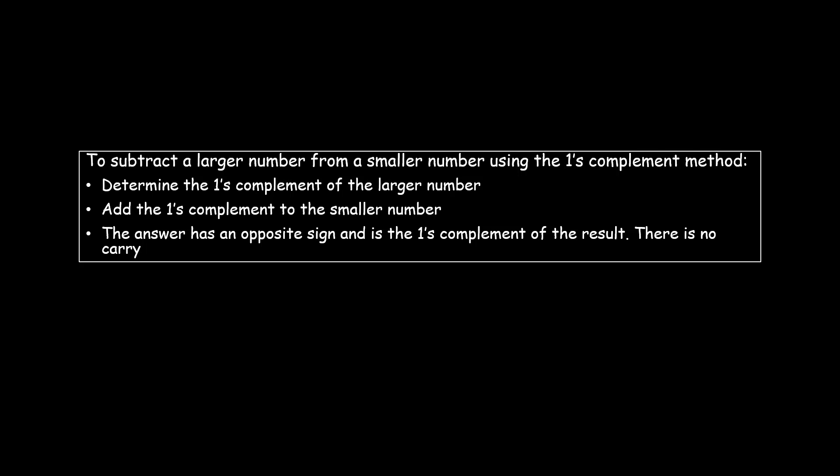When subtracting a larger number from a smaller number using the one's complement method, we first determine the one's complement of the larger number, then add it to the smaller number. When you add these, you will not get a carry — this means the number is in its one's complement form and has the opposite sign. So we need to find the one's complement of the result and negate it.